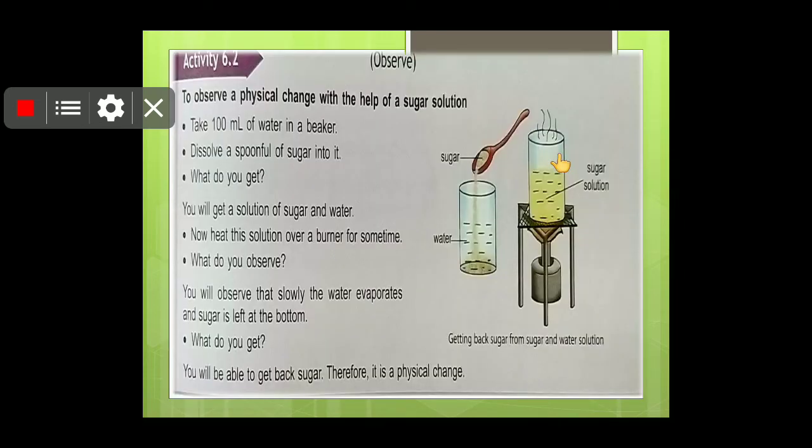To observe a physical change with the help of sugar solution. Students, you must have studied in class 6 about the separation of substances. In that, we have studied about separating salt and sugar from the solution. As you know, salt and sugar is soluble in water. So we may get it back by evaporating the water. So as a residue, we will get back the salt and sugar. So this is a physical change because we may get back the water and the sugar or salt which is dissolved in that water.